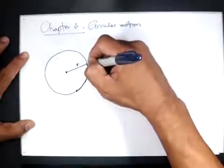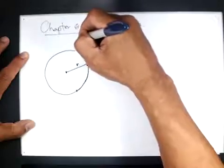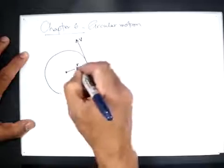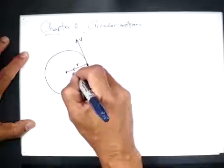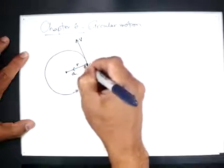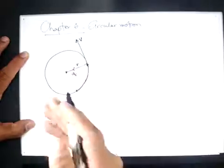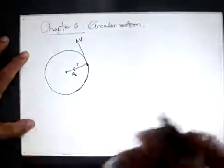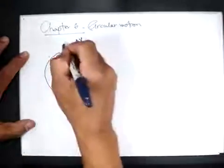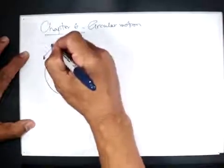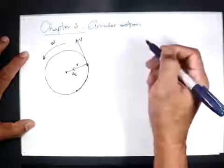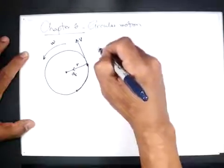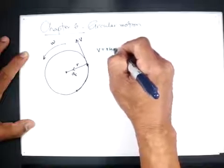We have tangential velocity or linear velocity, and then we have what we call centripetal acceleration that's directed towards the center of the circle. This makes the object or particle move in circular motion. We do have omega, which is angular velocity, so we have the relation V equal to R omega.